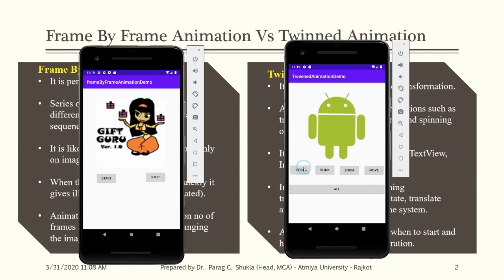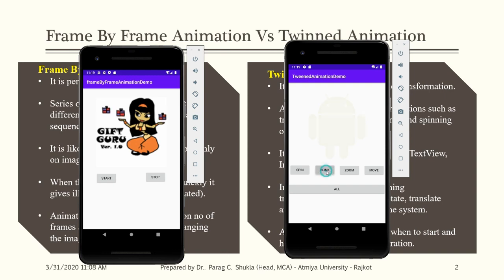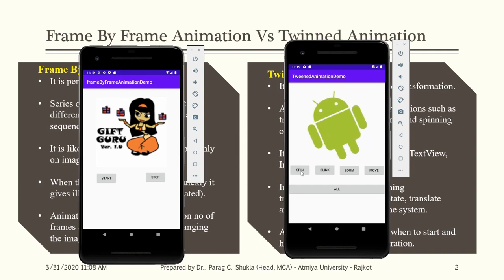In tween animation, if you click on spin, that object is going to spin. Here, not only images but also buttons, layouts, and other views can be spun, blinked, or moved. This is the difference between frame-by-frame animation and tween animation.